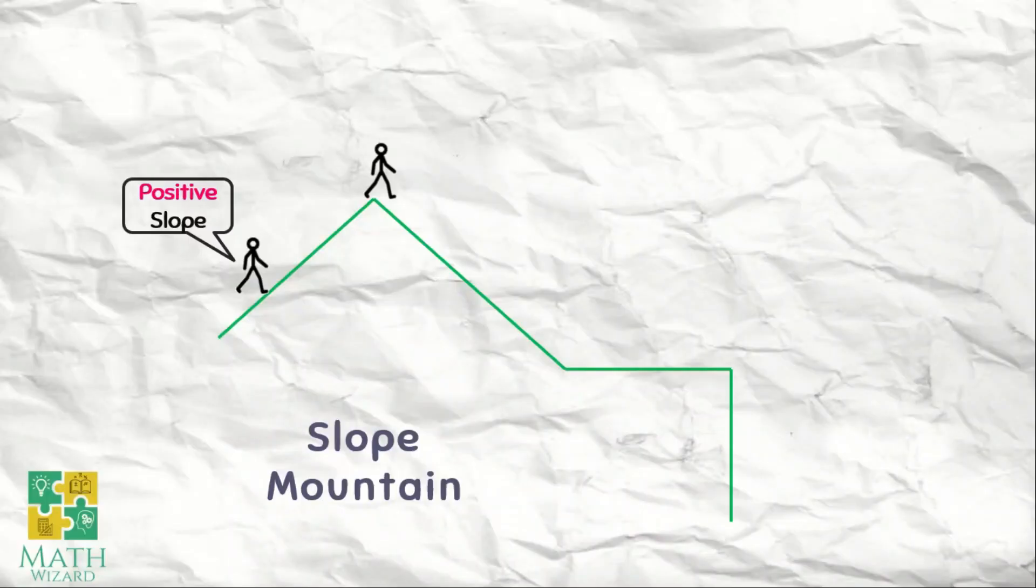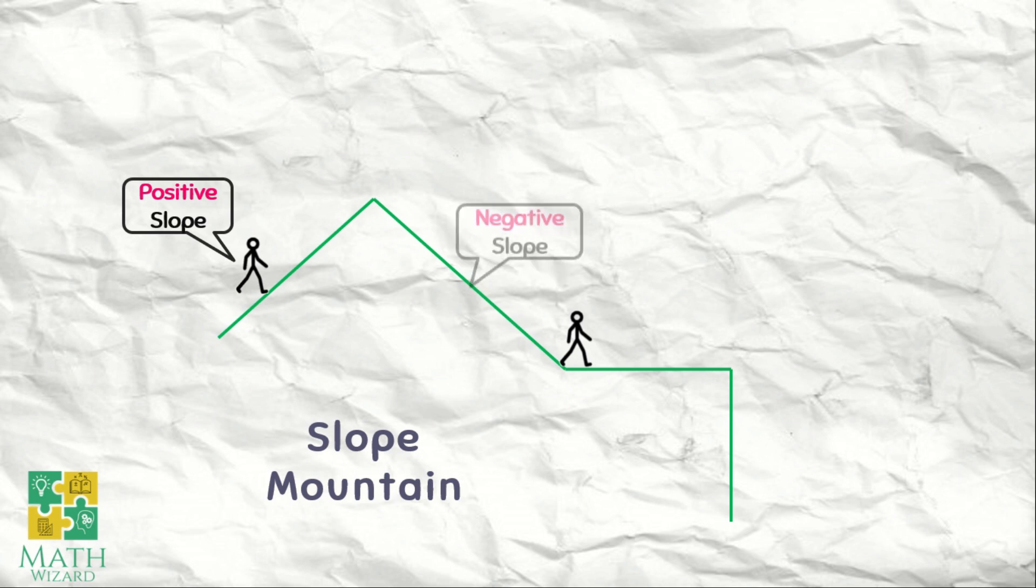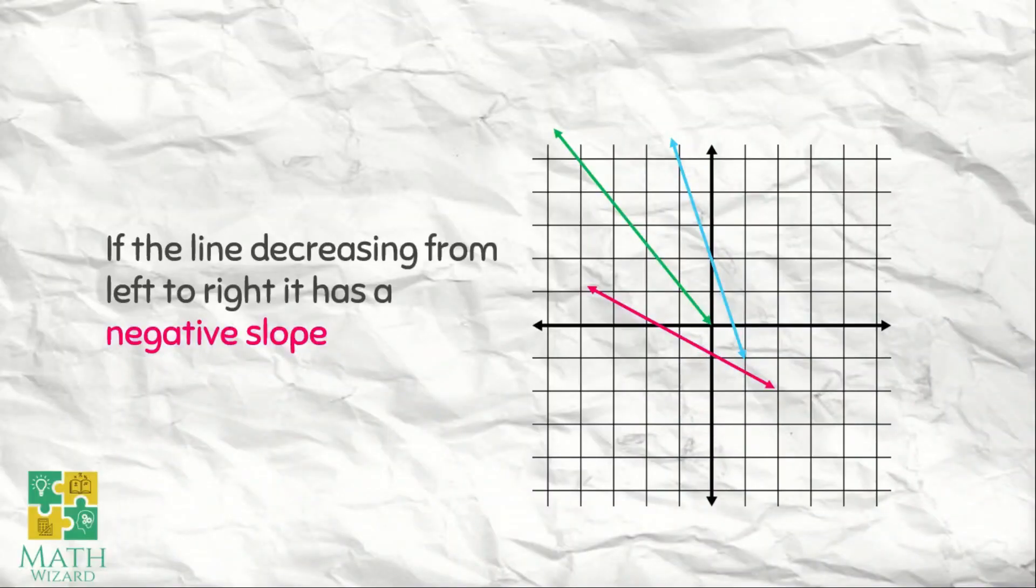But if you are going downhill naman from left to right, or decreasing from left to right, then it has a negative slope. Ibig sabihin, kung yung line is decreasing from left to right, the slope is negative. Like for this one,